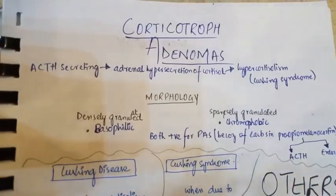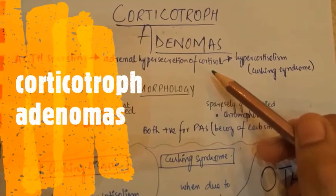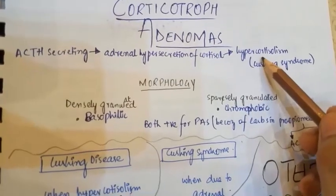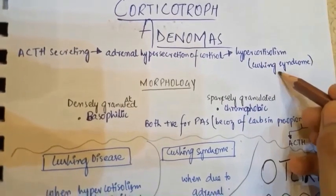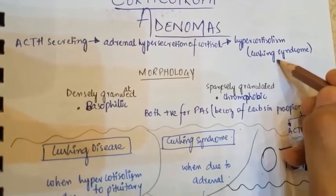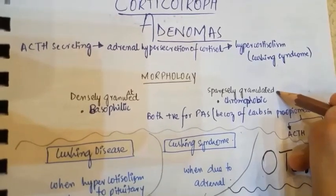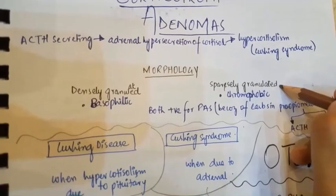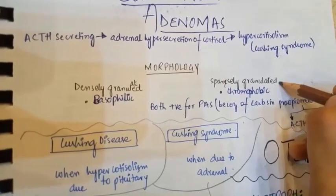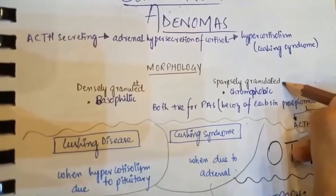Corticotroph adenomas are basically ACTH-secreting adenomas, which result in adrenal hypersecretion of cortisol, causing hypercortisolism — Cushing syndrome. They have the same general morphology as lactotroph or somatotroph adenomas: classified into densely granulated adenomas with basophilic cytoplasm and sparsely granulated adenomas with chromophobic cytoplasm.